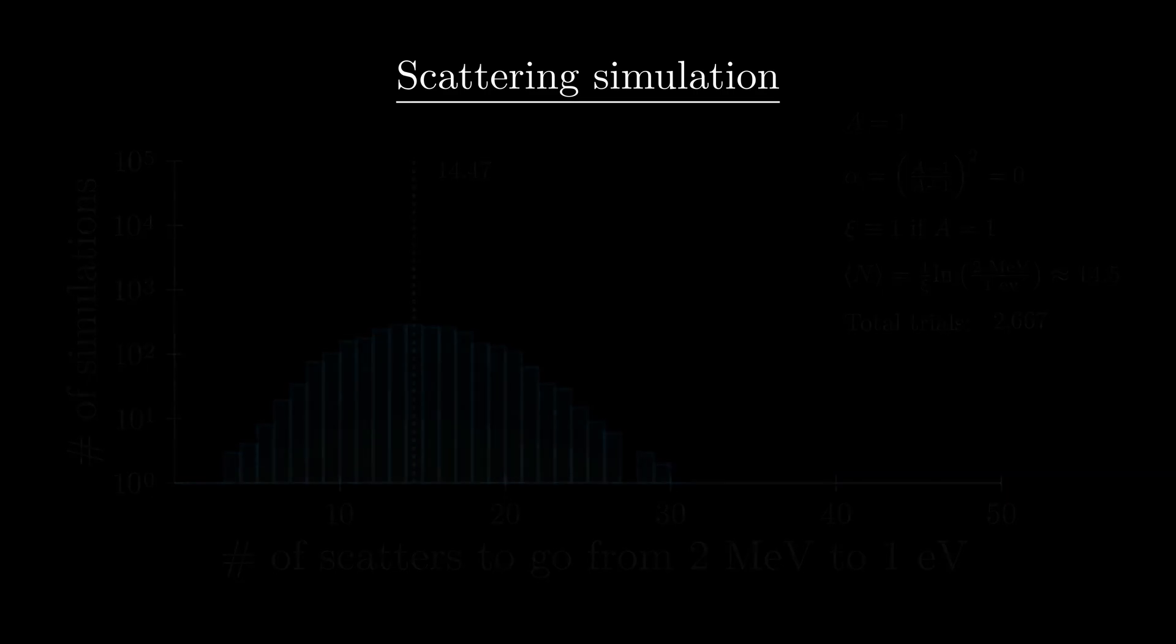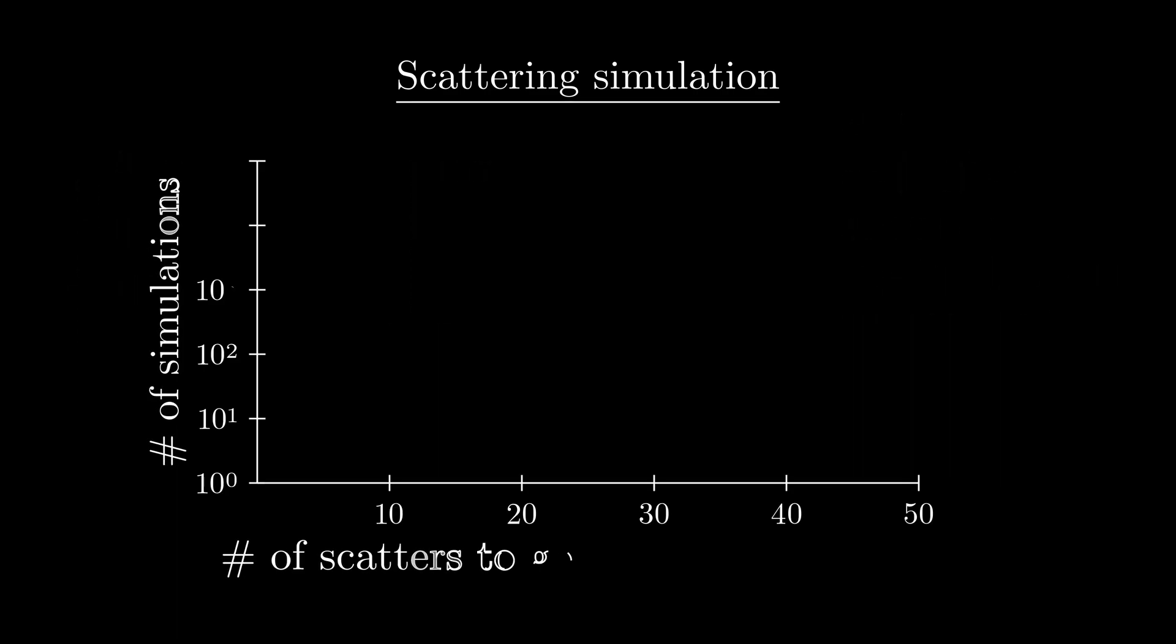Now, let's up our A value to 2. So the medium our neutron is scattering in is composed of particles twice the mass of the neutron itself. This could be something like deuterium in heavy water, which is used to slow down neutrons in Canadian nuclear reactors. Here, our alpha value is 0.11, and our average change in lethargy per scatter is 0.73. This is less than the previous value of 1, which shows that this material will be worse at slowing down neutrons.